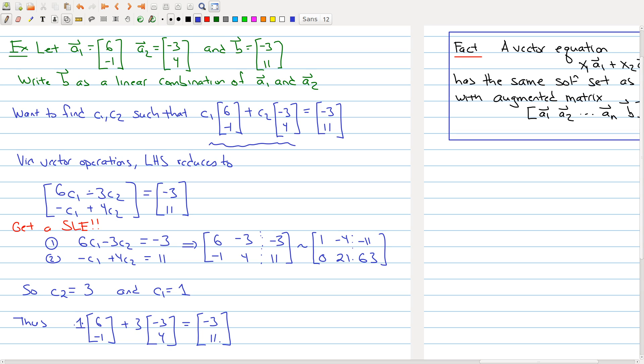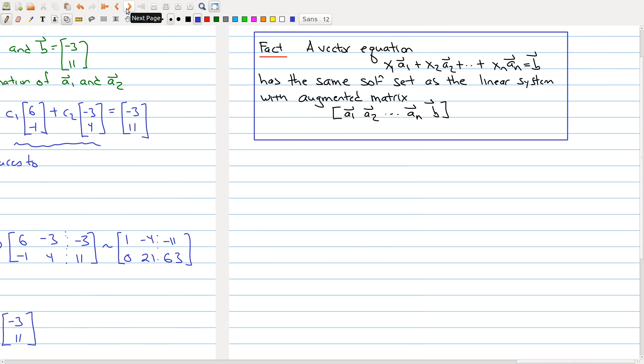Okay so on the next page here, kind of summarizing what we're seeing in this particular example: if you have a particular vector equation, right, so we talked about a linear combination, this looks like a linear combination, but this vector equation now has all the weights or unknowns x₁, x₂, to xₙ and you want to set it equal to b.